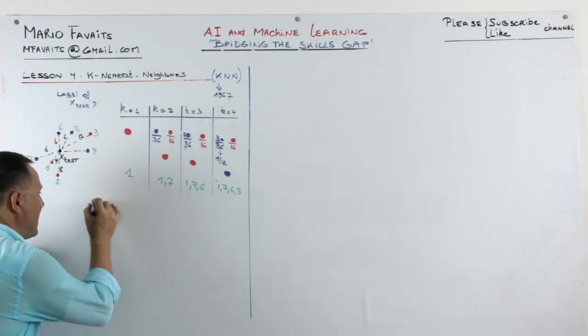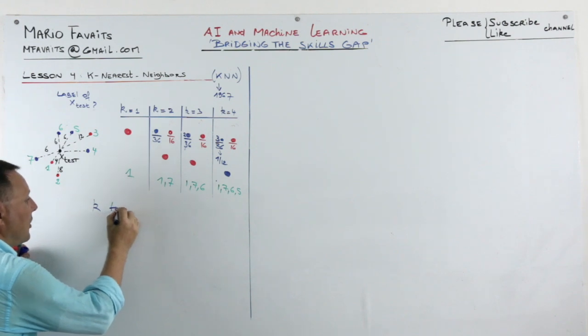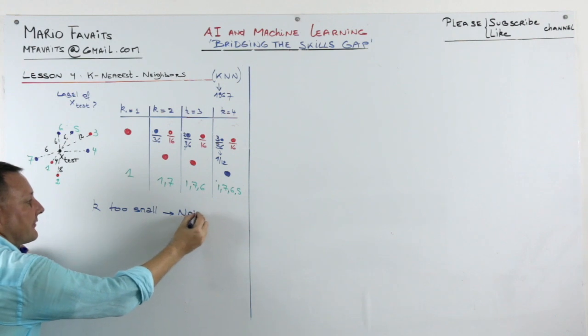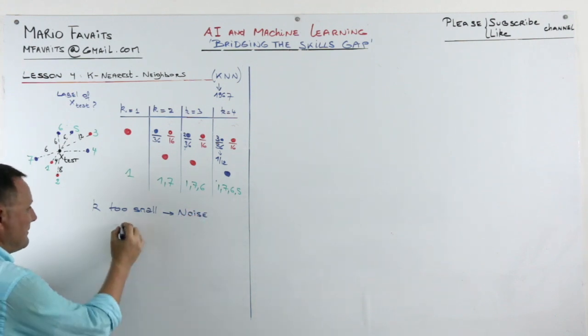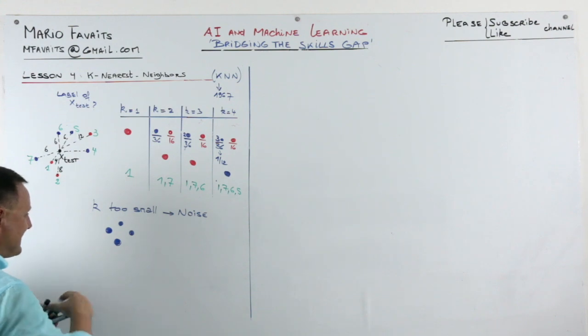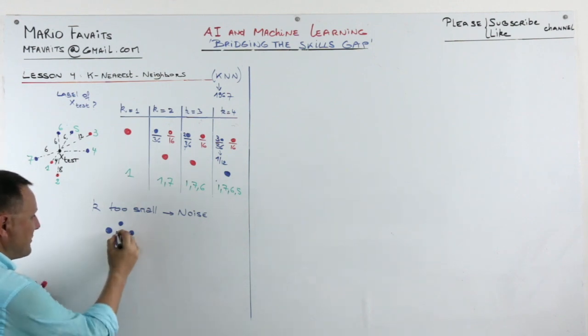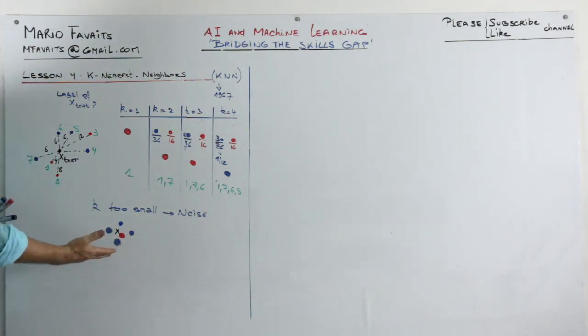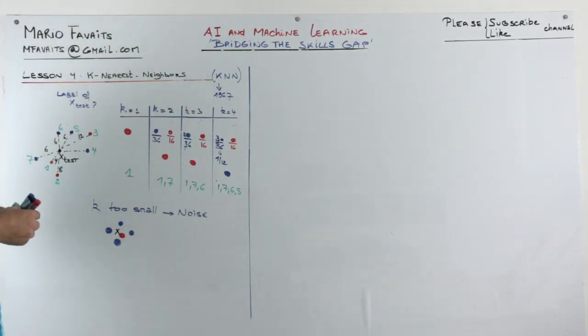Now if k is too small, you could be subject to noise. What I mean by that is you have several training points here, and coincidentally one red one sneaked in. And if this is your test point here, well you're going to label this point as red whereas it's actually surrounded by blues. This happens when k is too small.